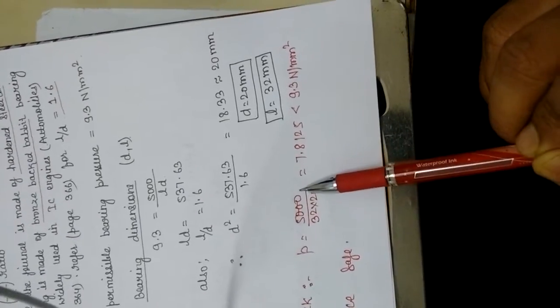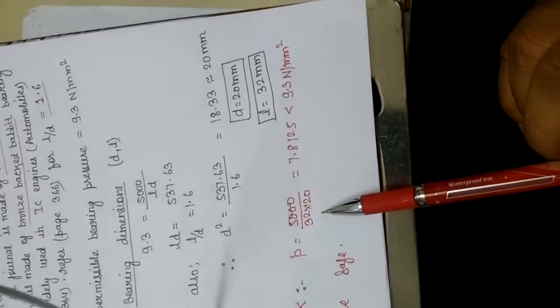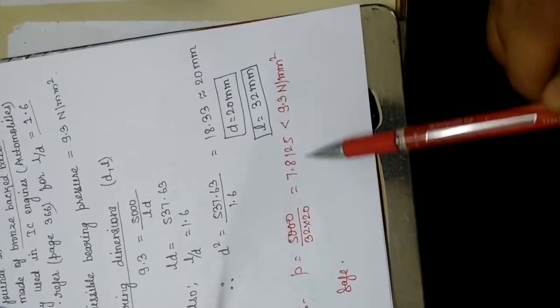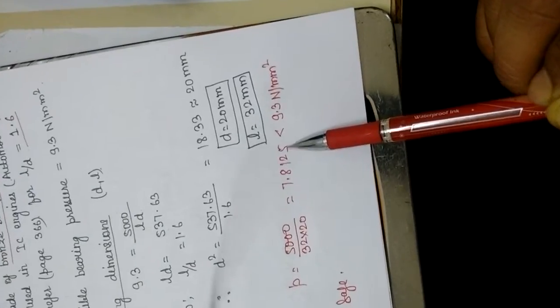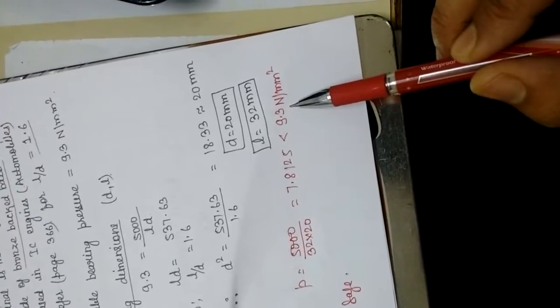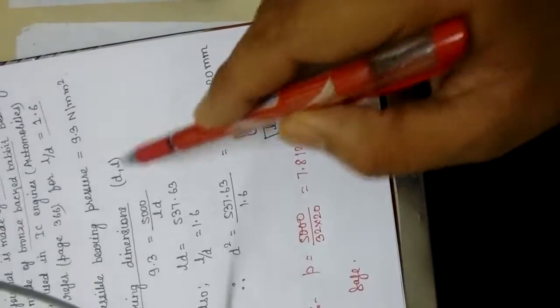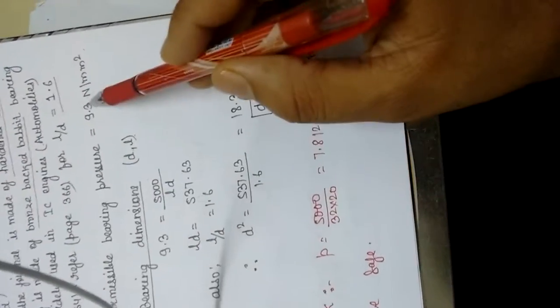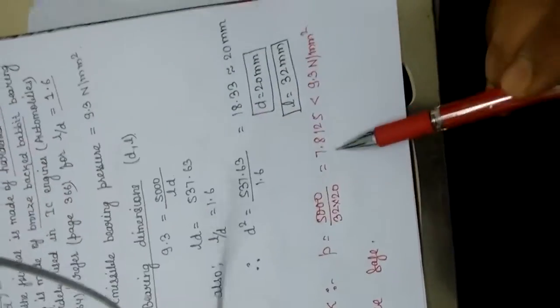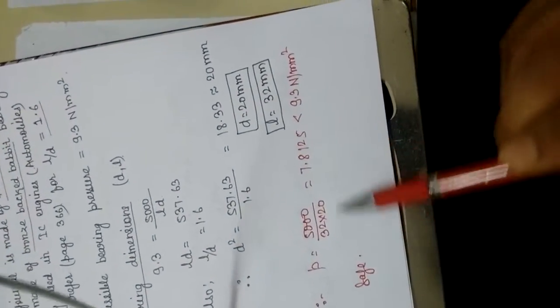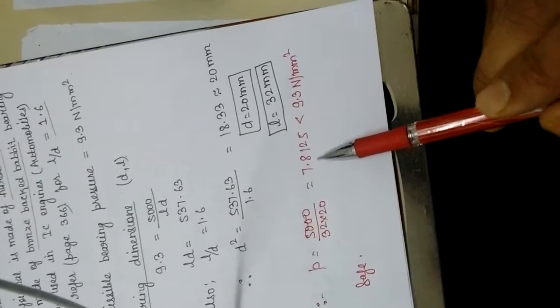Now we check the bearing pressure: P = W / (L × D). With W = 5000 Newton and L × D as calculated, P = 7.8125 Newton per mm square, which is less than 9.3 Newton per mm square. The calculated value is less than the assumed value from the design data book, so we accept the design as safe.